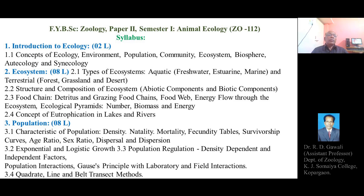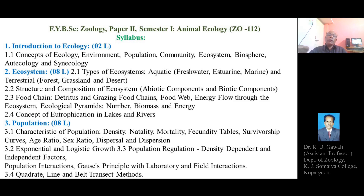Subtopic 2.2 is the structure and composition of the ecosystem. The components include abiotic components — soil, water, air, temperature, humidity, pressure — and biotic components — plants, animals, and microorganisms. Abiotic factors are the physical or non-living conditions of the environment, and biotic factors are the living components.